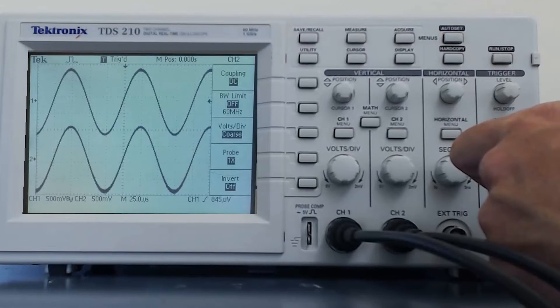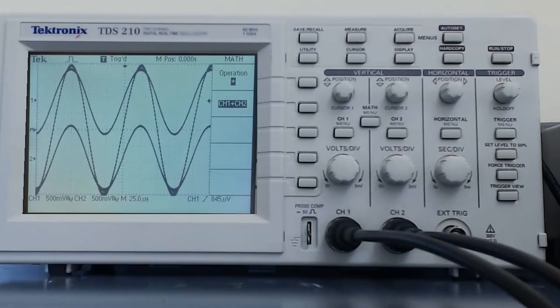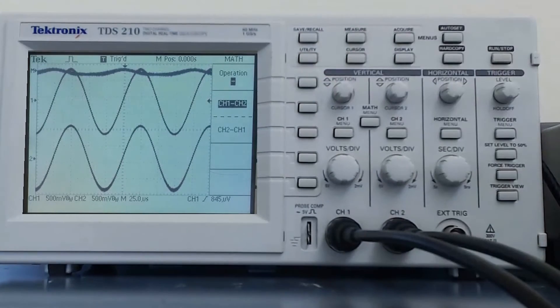In between the channel 1 and channel 2 buttons, there is a math button. The math button will allow us to do some mathematical operations on our signals. For example, we could subtract or add the waveforms from channel 1 and 2 together.